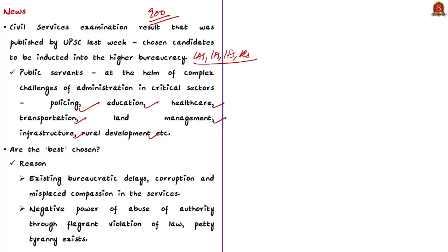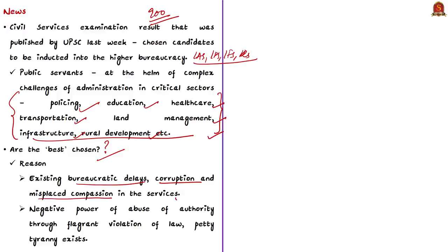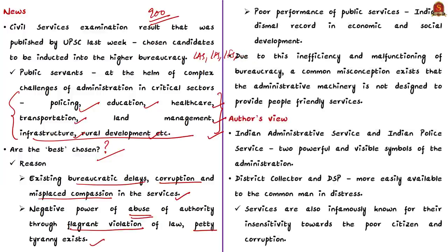These officers will have a say in almost every sphere of India. But the question is: are these chosen candidates suitable for the above-mentioned roles? This is asked because of existing bureaucratic delays, corruption, and misplaced compassion in these services. There is abuse of authority through flagrant violation of law, and even petty tyranny exists. This results in poor performance of public services, and bureaucracy is blamed for India's dismal record in economic and social development.